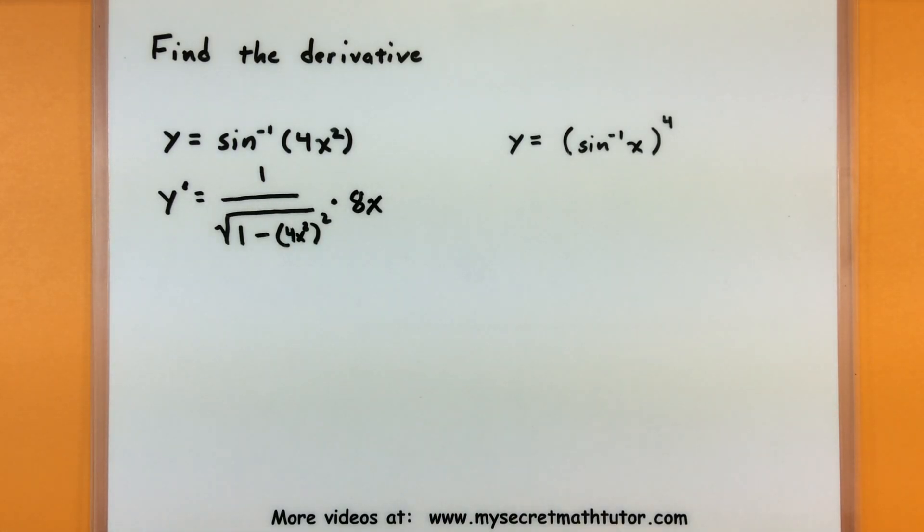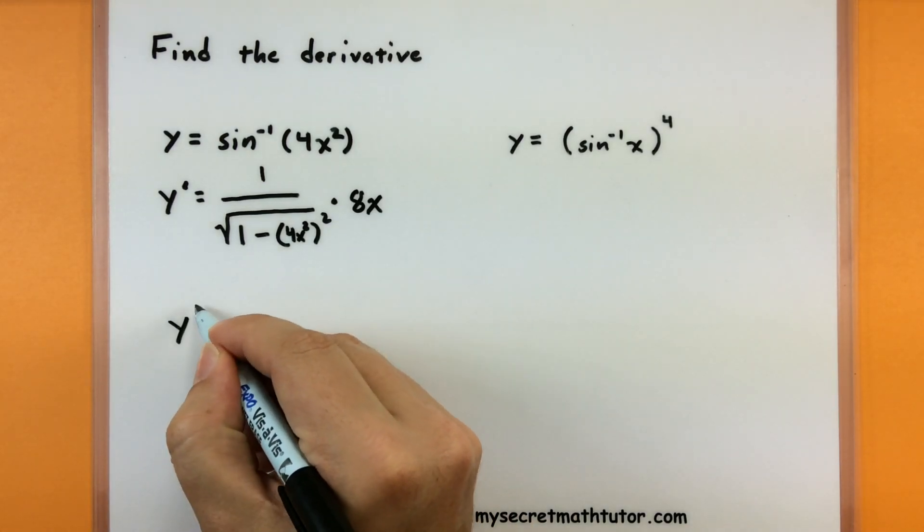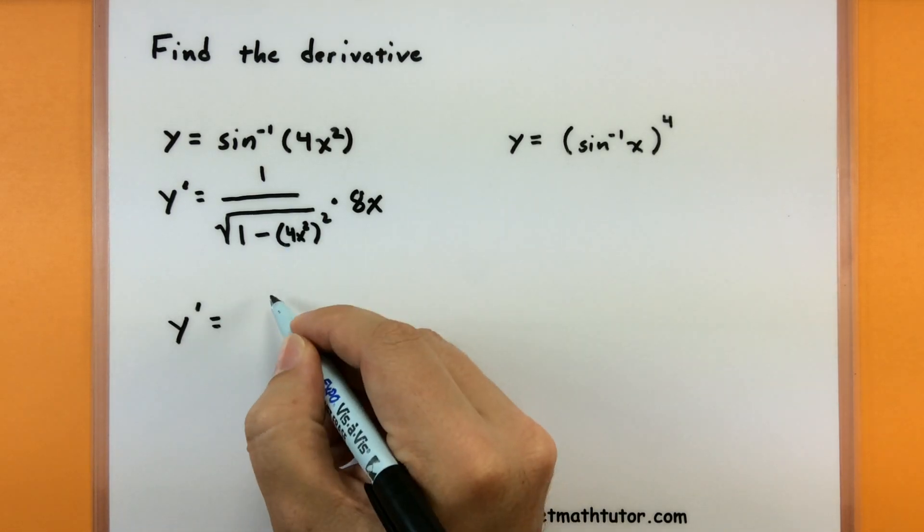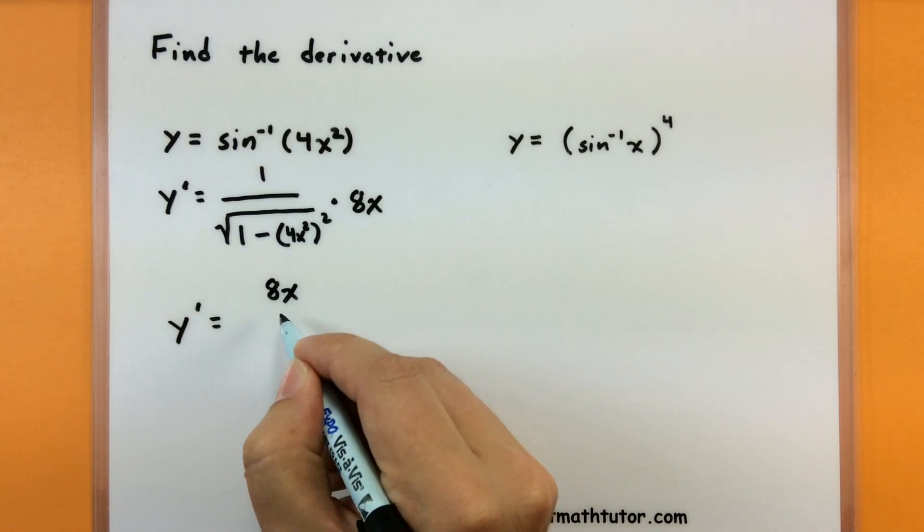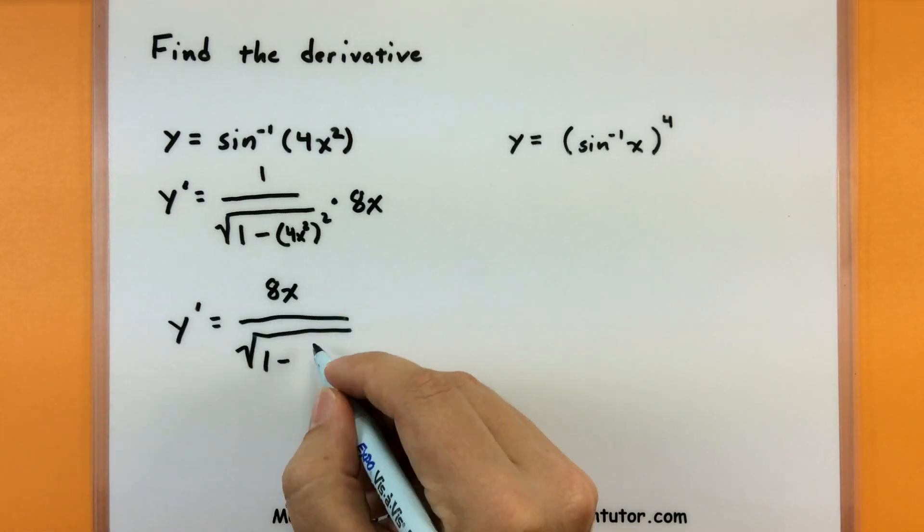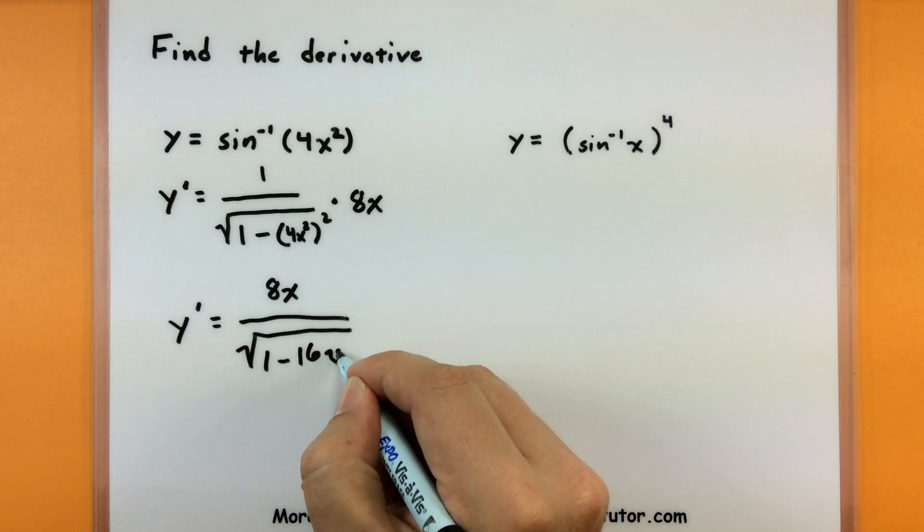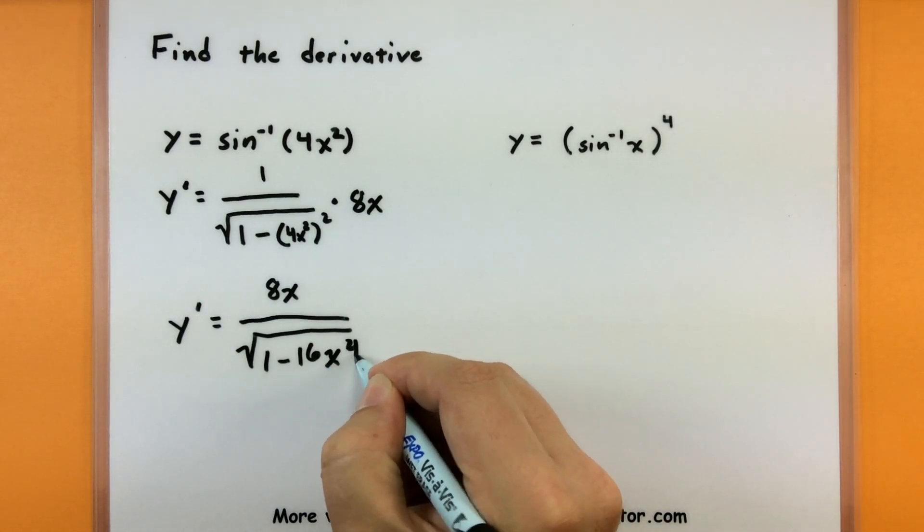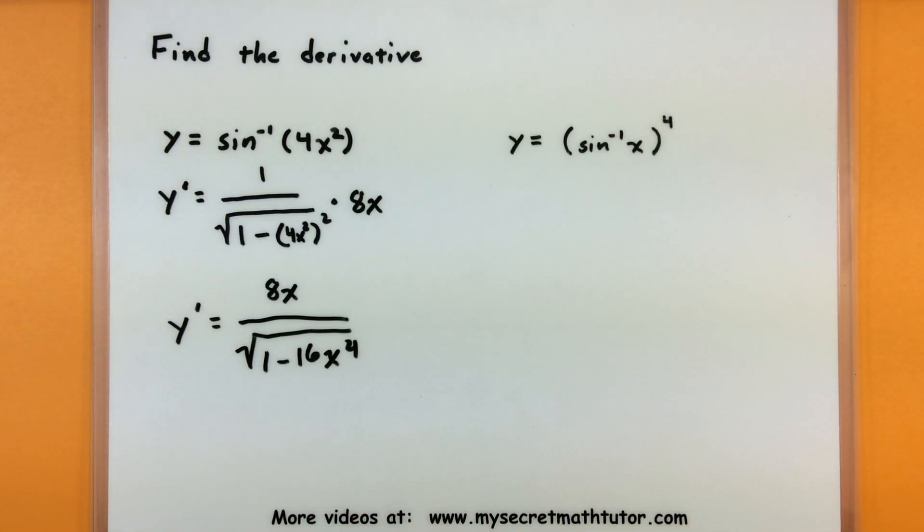Not too bad, we have a little bit of cleaning up we can do. So let's go ahead and say that the derivative of y, we'll put that 8x on top, all divided by the square root of 1 minus, let's see, square the 4, we get 16, square the x squared, we got x to the 4th. Nice. And there's our derivative. Notice again, no trigonometric functions, looks a little complicated, but sure enough, that is our derivative.